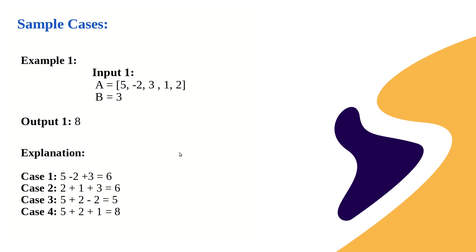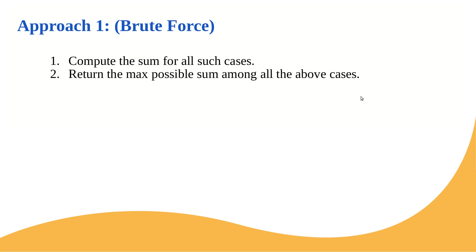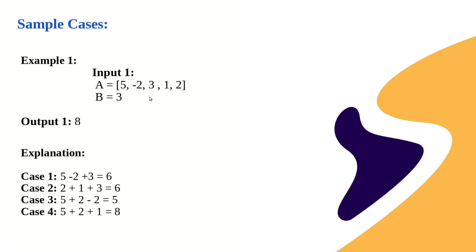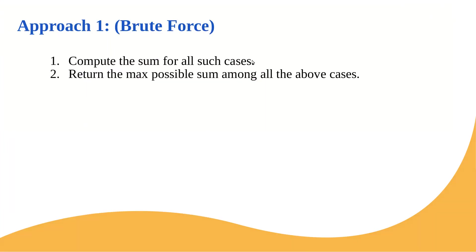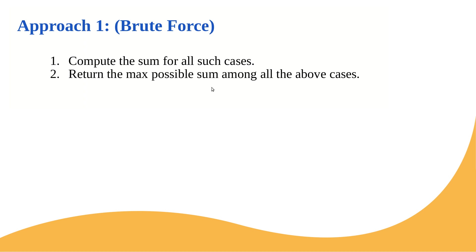This problem belongs to a category where solving it is not a big issue — it seems simple and we can apply brute force. But the important thing to understand is the accuracy as well as the efficiency of the code. Approach 1, the brute force approach, is to compute the sum of all such cases — picking from each end combination — and return the maximum possible sum among all cases. This is not a very optimal solution because we need to find all possible cases.